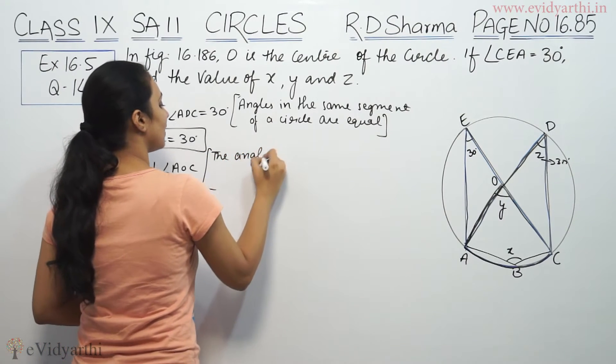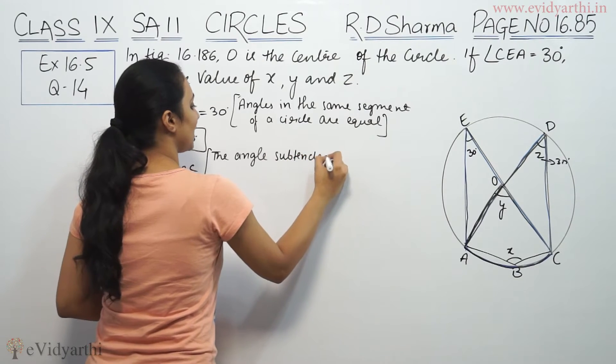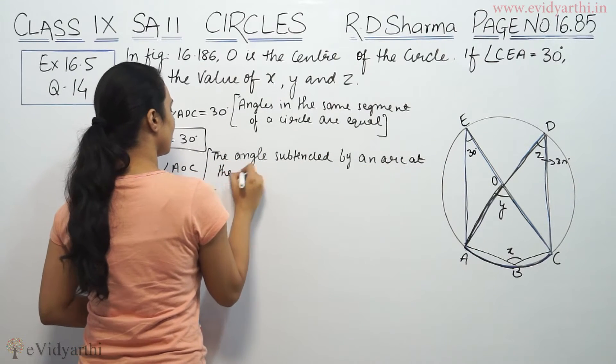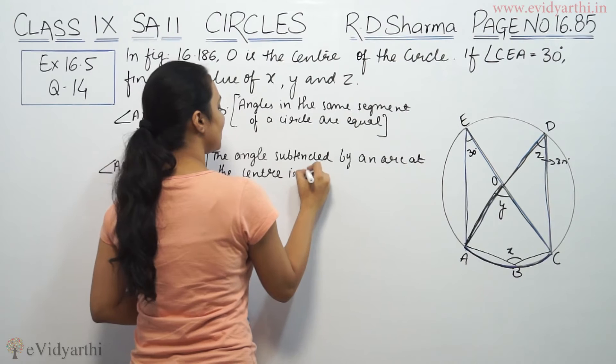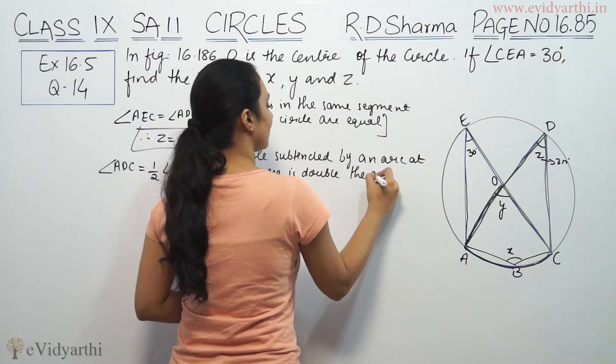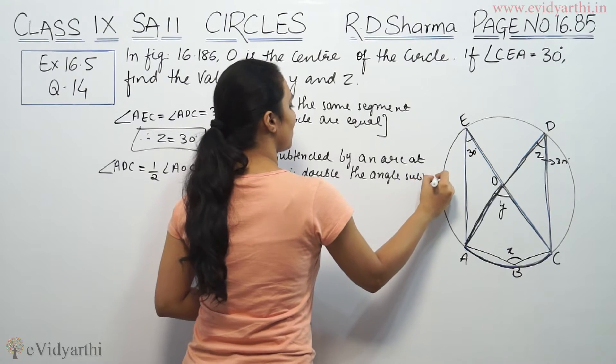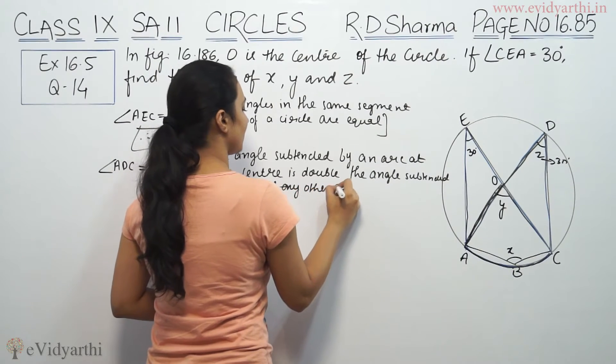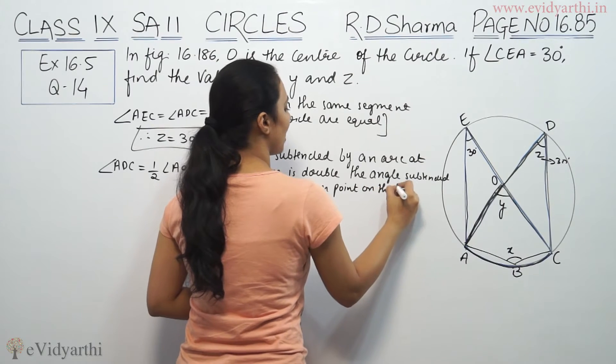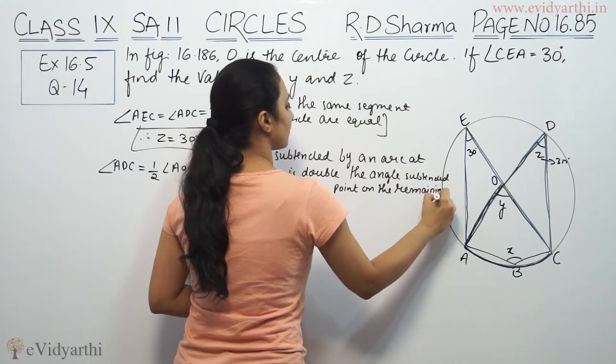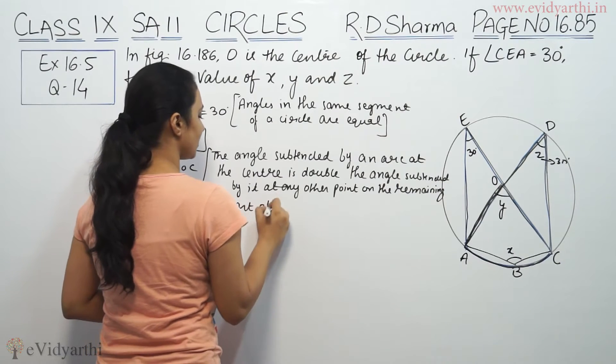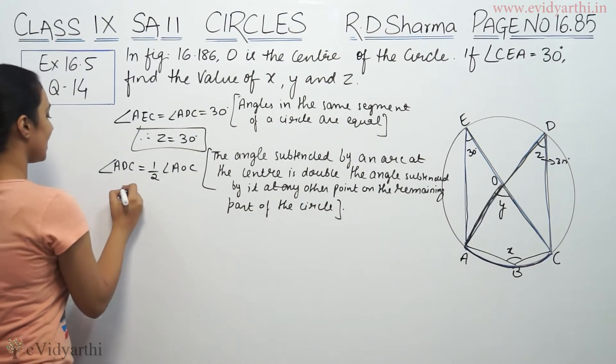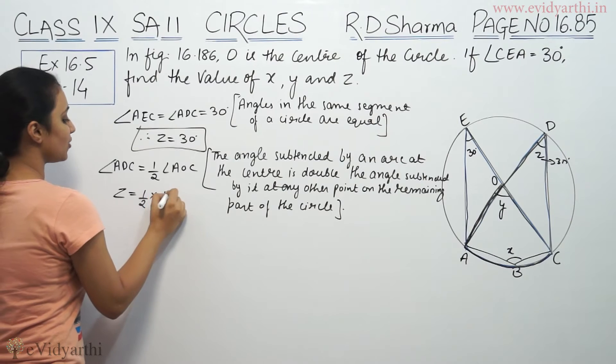The angle subtended by an arc at the center is double the angle subtended by it at any other point on the remaining part of the circle. So from here, angle ADC, which is Z, is equal to half into angle AOC.